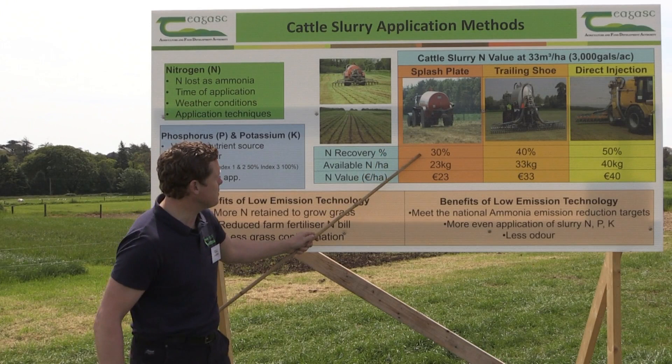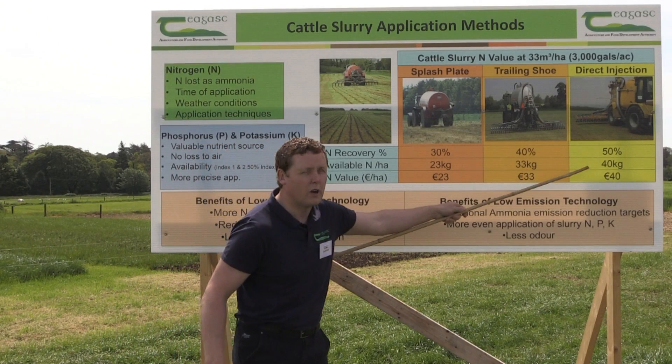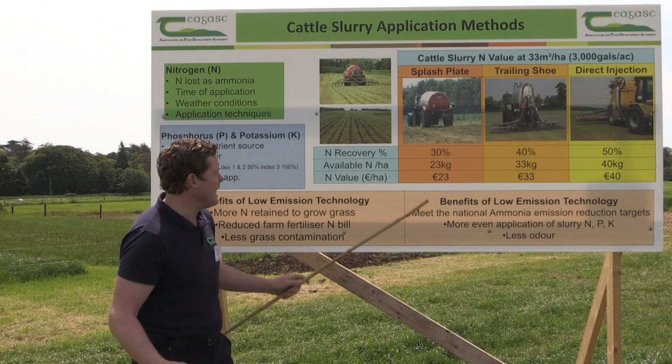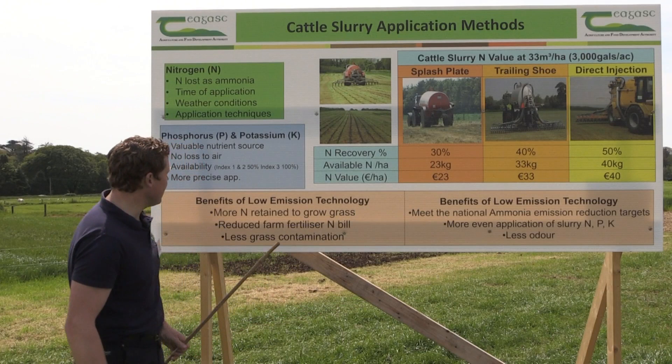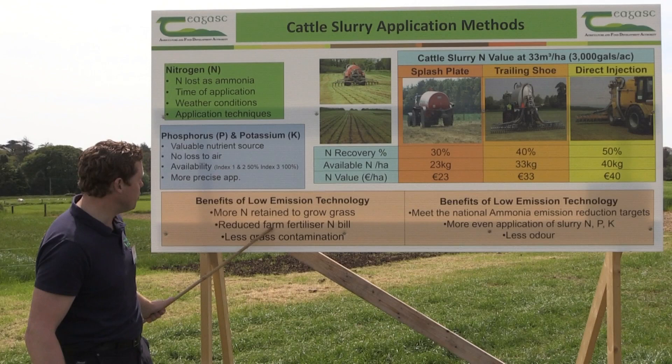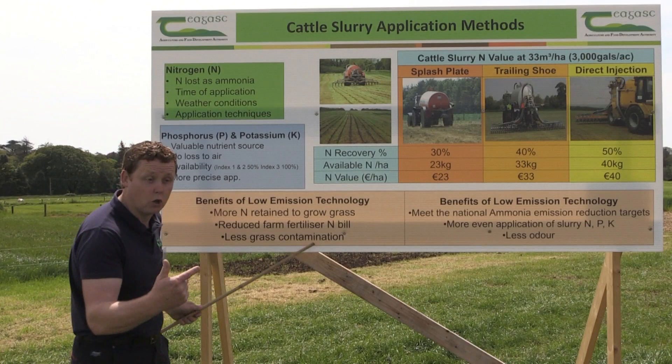The available N goes from 23 kilograms per hectare right up to 40 with the low emission methods, and it's all about value at the end of the day — recover your nitrogen, recover the value of your slurry. The benefits of low emission technology: retain more N and grow more grass, reduce the fertiliser bill on your farm, and less contamination so easier grazing of that sward.